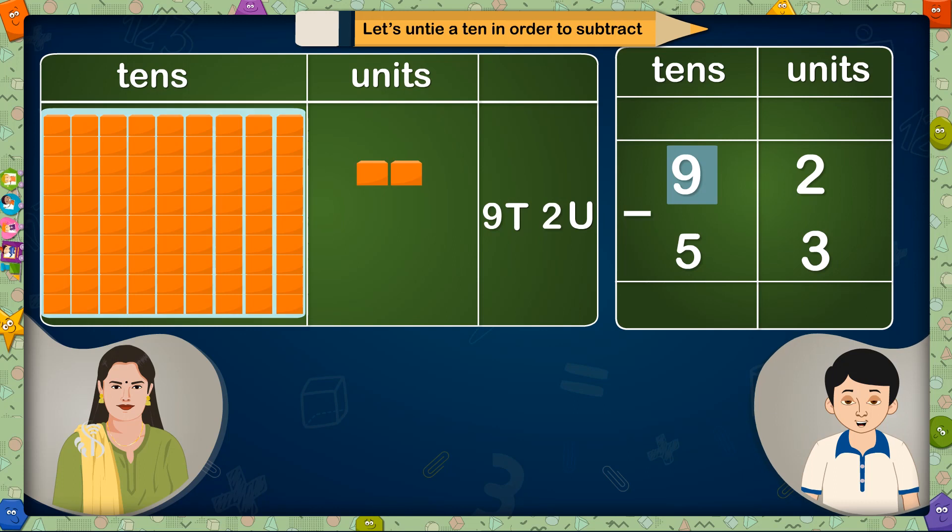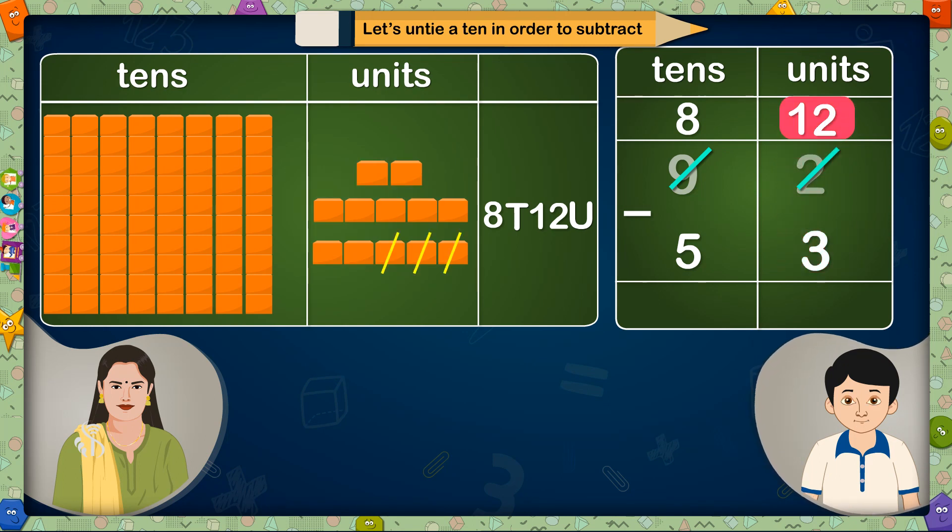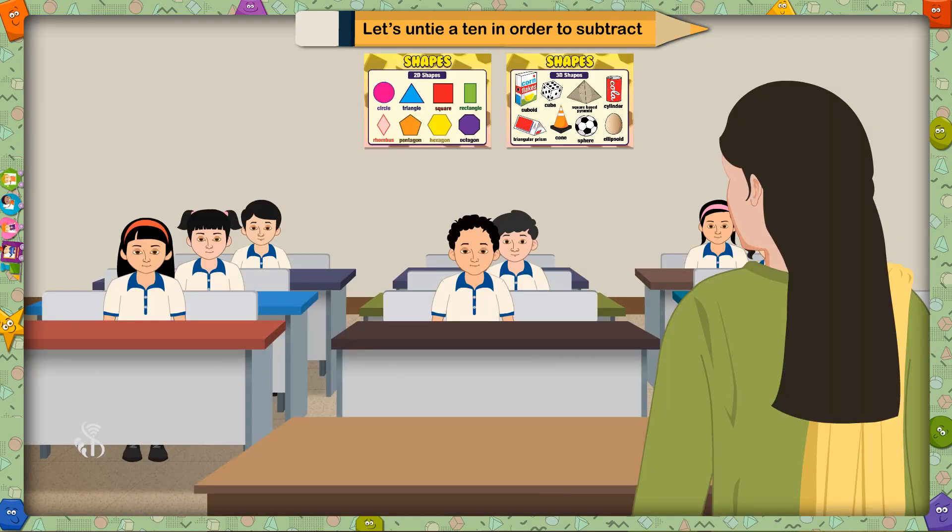So we will have to untie a 10. So only 8 tens will remain here and we will have 12 units in units place. Reduce 3 units from 12 units and 9 units will remain here. After reducing 5 tens from 8 tens, 3 tens will be left. So 92-53 is equal to 39.